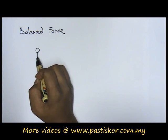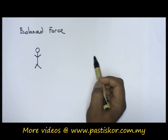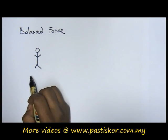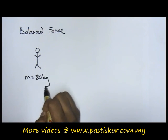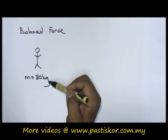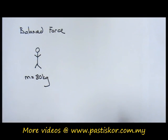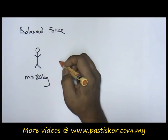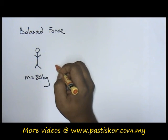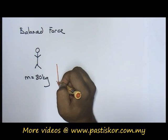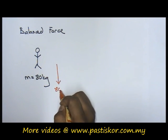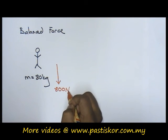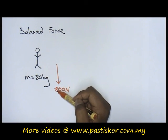Let us take a person as an example. Let's say my mass is 80 kilograms. If you label the forces acting on my body, and we convert mass to weight, that means there is 800 newtons of force acting downwards.